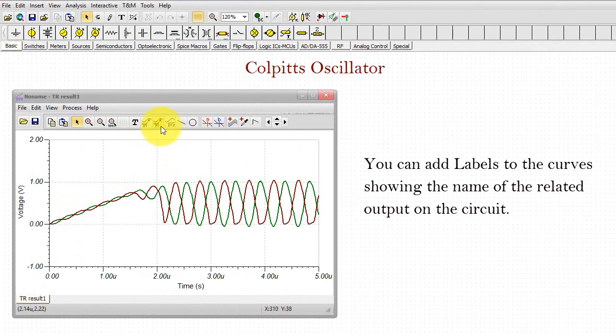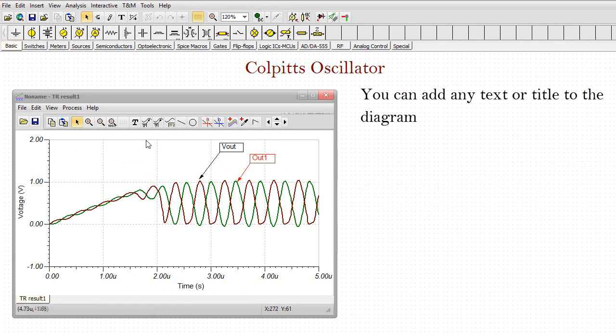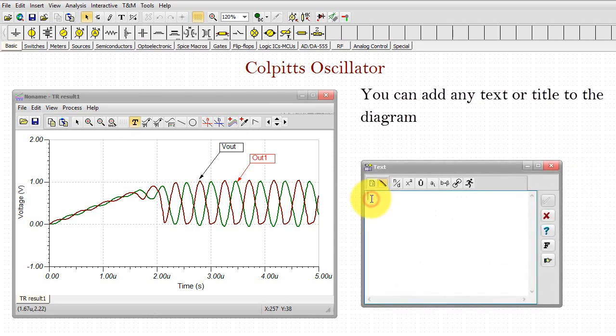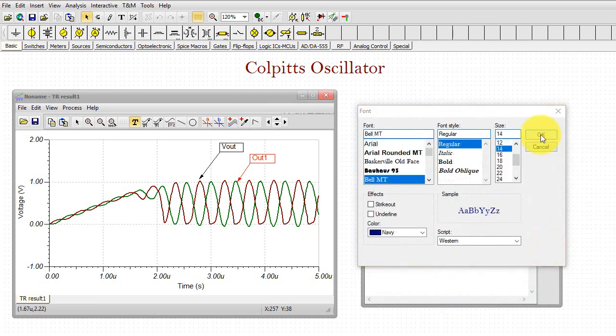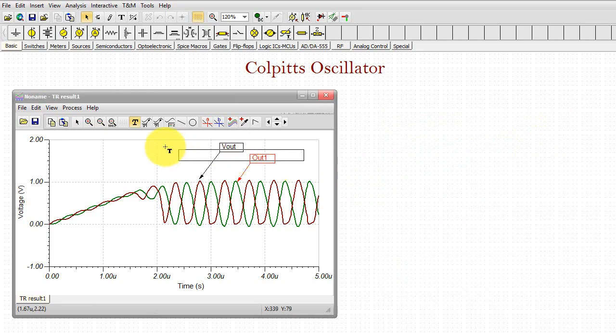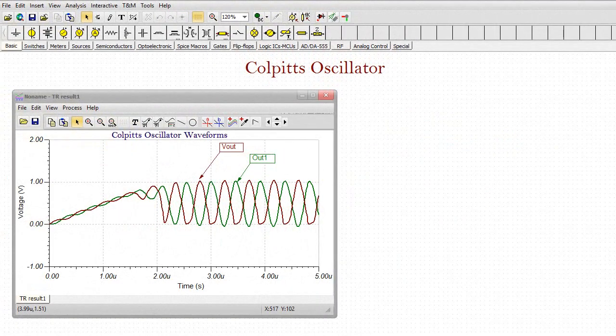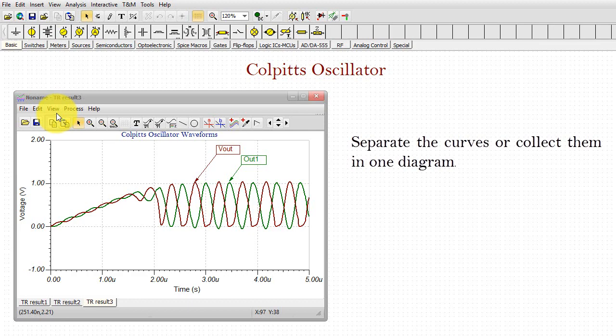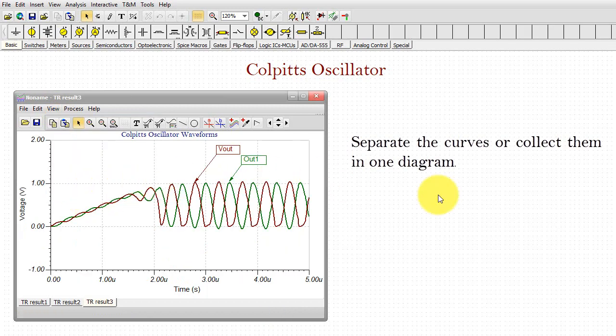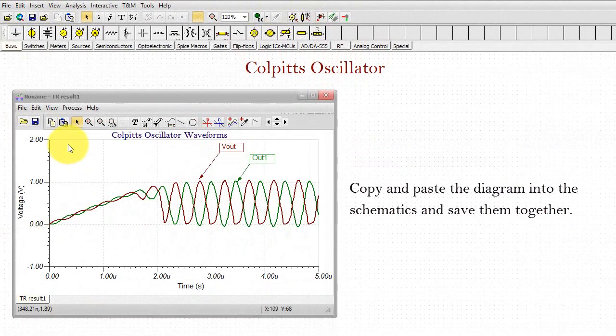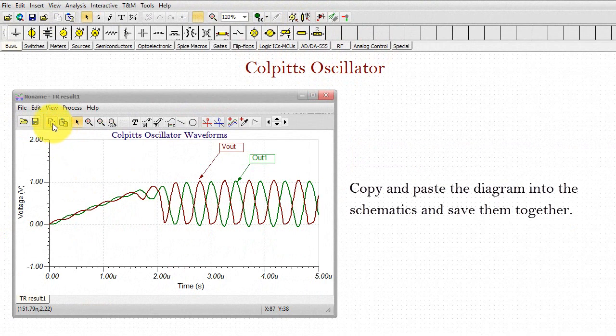You can add labels to the curves showing the name of the related output on the circuit. You can add any text or title to the diagram. Separate the curves or collect them in one diagram. Copy and paste the diagram into the schematics and save them together.